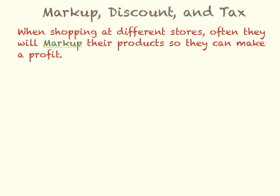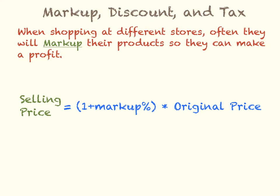Markup, discount, and tax. When shopping at different stores, often the store will mark up their products so they can make a profit. The formula for the selling price, taking into account the markup, is: selling price equals 1 plus the markup percentage, written as a decimal, multiplied by the original price. That's how you find your markup price.